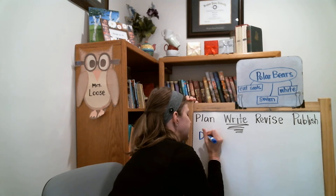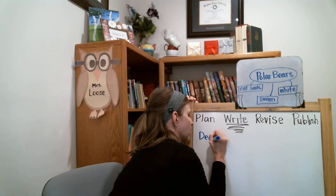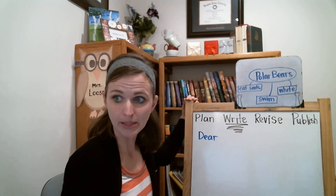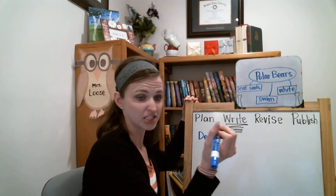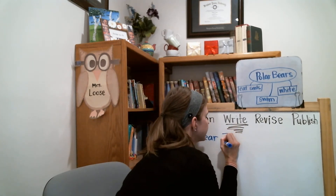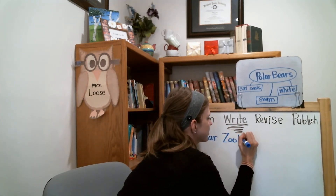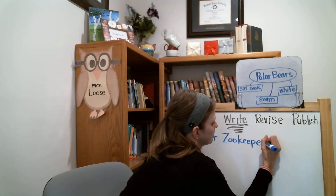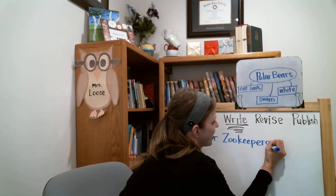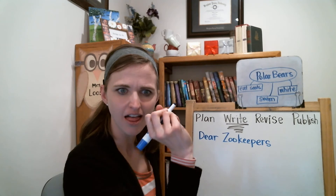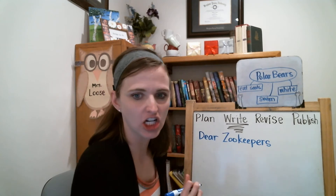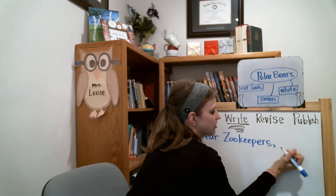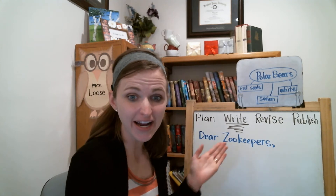When we write a letter, we write who it's to first. You can use the word 'dear' to start the letter — dear, D-E-A-R. I want to write it to the zookeepers, all the zookeepers. Let's write 'Dear Zoo Keepers,' then make a little line called a comma right here. You can write that exactly the same on yours.